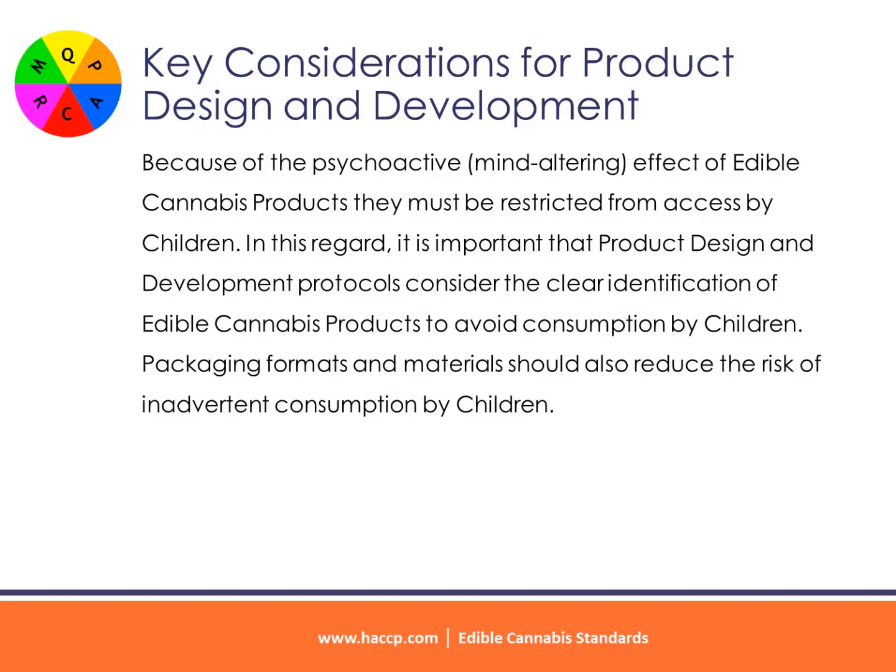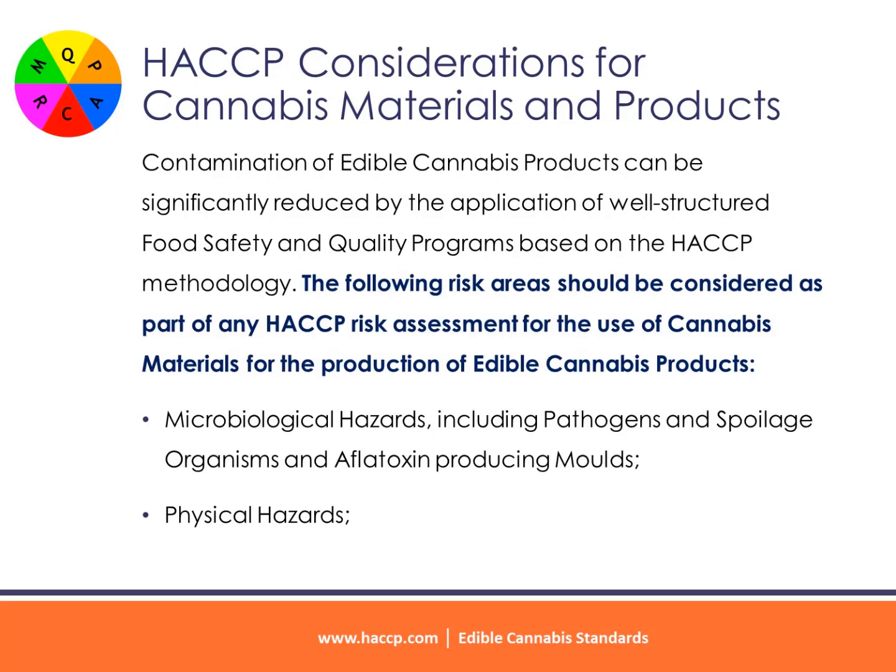In this regard, it is important that product design and development protocols consider the clear identification of edible cannabis products to avoid consumption by children. Packaging formats and materials should also reduce the risk of inadvertent consumption by children. HACCP considerations for cannabis materials and products: contamination of edible cannabis products can be significantly reduced by the application of well-structured food safety and quality programs based on the HACCP methodology.